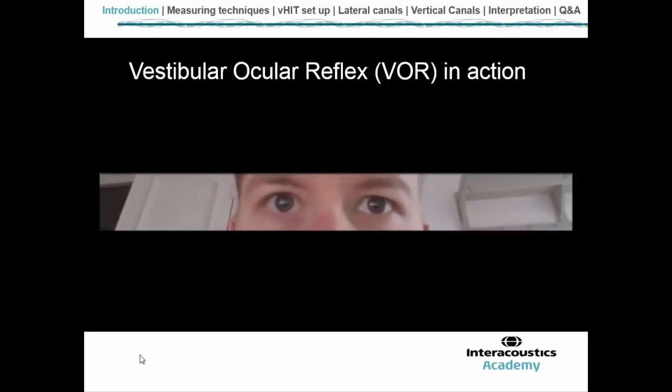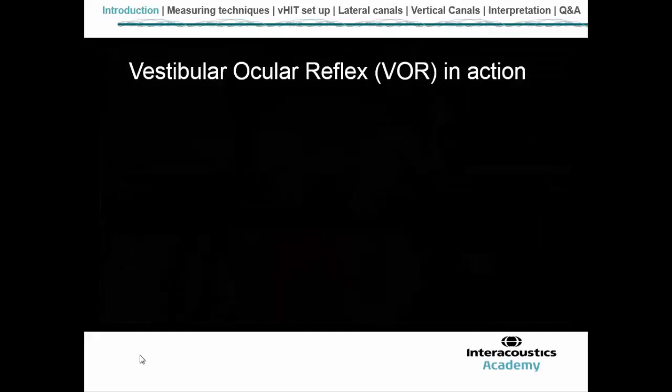What tells my eyes to move in an equal and opposite direction is the vestibular ocular reflex. A really important point to remember is that the vestibular ocular reflex in a normal patient will tell your eyes to move in an equal and opposite direction to the head. Now, what I want to do is get you to do a task to use your VOR. Look at the target on the screen and move your head from left to right. You should be able to maintain your vision on the target. If you can't maintain your vision on the target, this can tell you that there could be a vestibular problem.